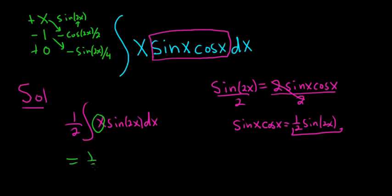So this is going to be 1 half, so following the arrows here, we have negative x over 2, cosine 2x, plus 1 fourth, sine 2x, plus c.